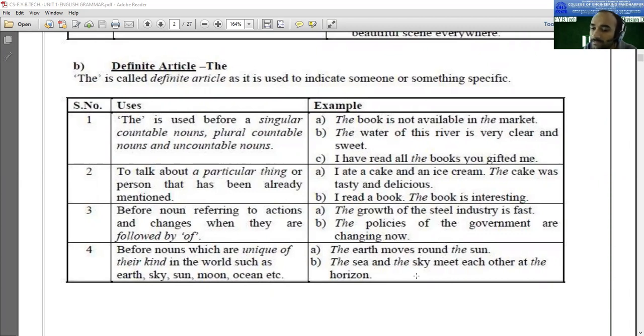The sea and the sky meet each other at the horizon. Here, sea and sky, sea and the sky, these are the two unique nouns. They are unique. That's why we have to use 'the' as an article before these nouns.